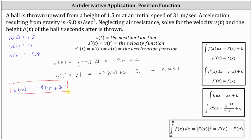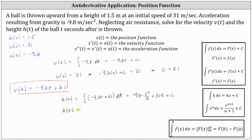For the second part of the question, we're asked to determine the height function, which is the position function. Since the height function is equal to the antiderivative of the velocity function, h of t is equal to the indefinite integral of negative 9.8 t plus 31 dt, which is equal to negative 9.8 times t squared divided by two plus 31 t plus C. Simplifying, we have h of t is equal to negative 4.9 t squared plus 31 t plus C.